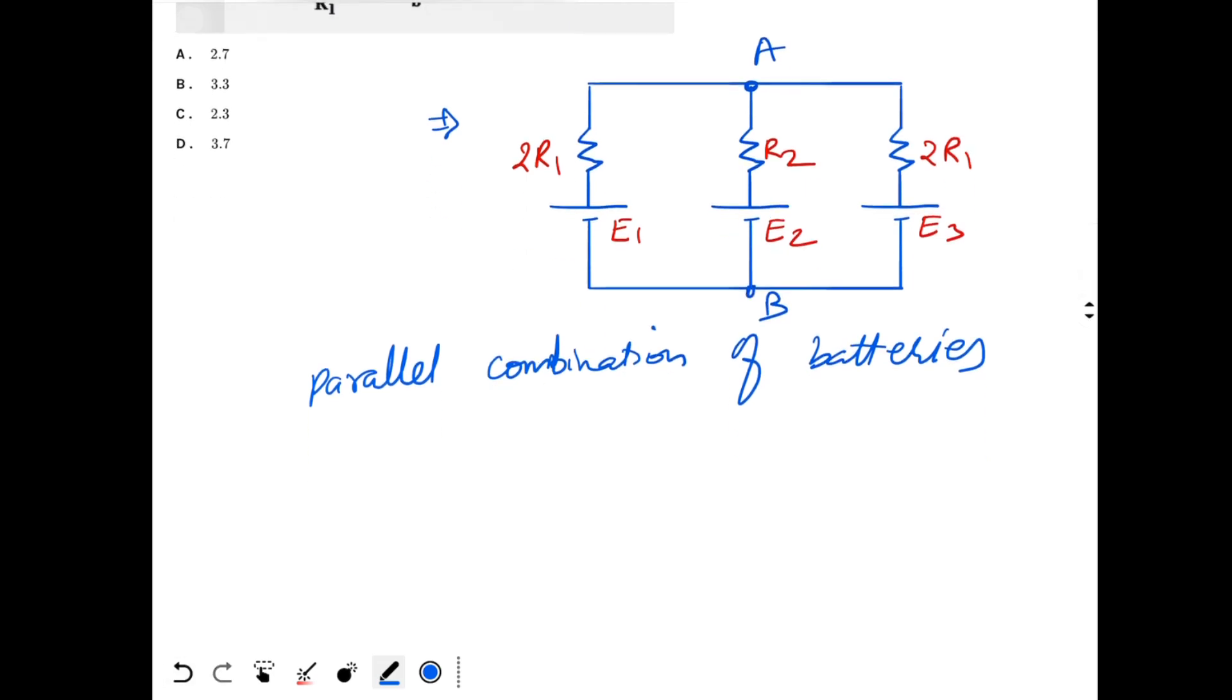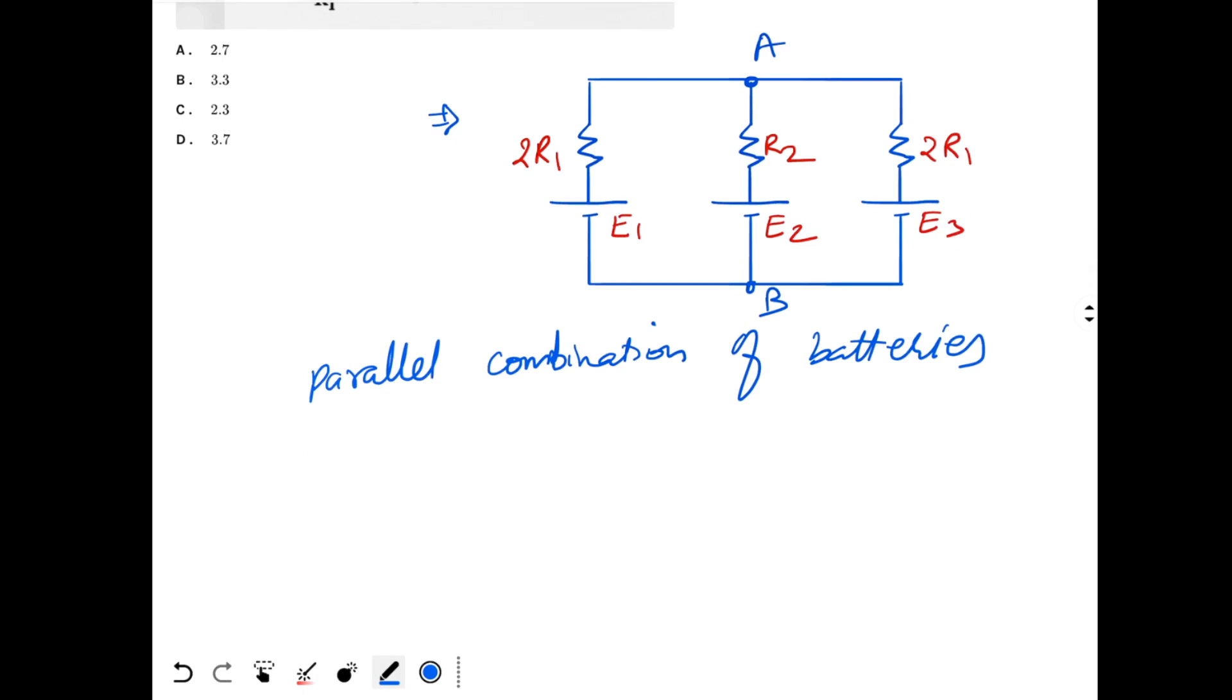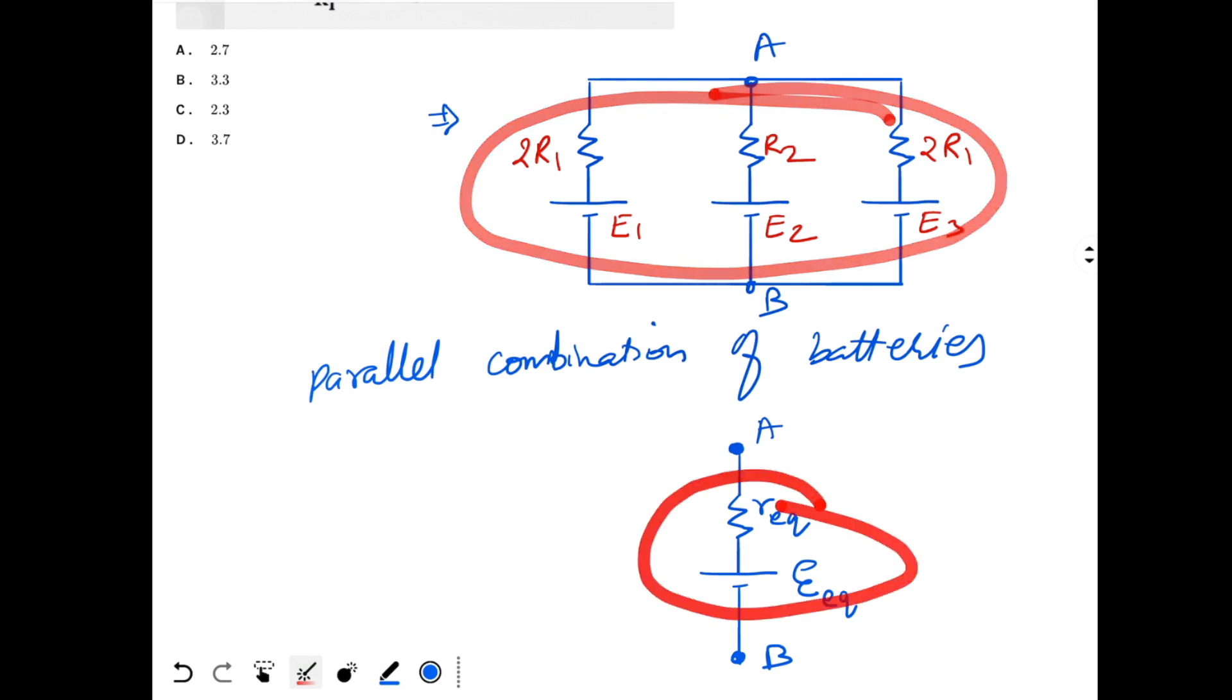I can combine the batteries such that I get a single battery between the terminals A and B. This is terminal A, and then I have this terminal B over here. And I have a single battery of EMF E_equivalent and resistance R_equivalent. So the three batteries are combined together to give a single battery like this.